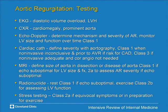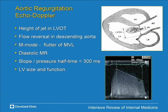Assessment of AR severity is primarily by echo-Doppler. Cardiac cath is used if there's discrepancy between echo and physical examination. MRI and CT are useful for aortic size. The height of the AR jet in the LVOT is probably the best way to assess severity, along with flow reversal in the descending aorta. Assessment of AR is somewhat more difficult than MR. Severe chronic AR requires evidence of left ventricular dilatation to confirm the diagnosis.